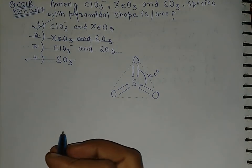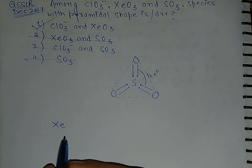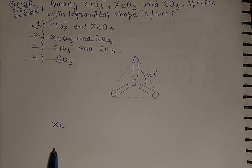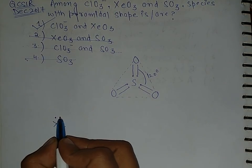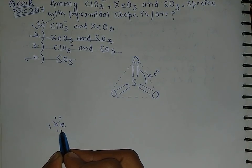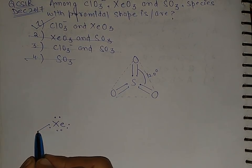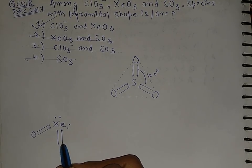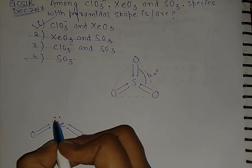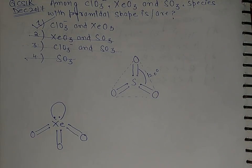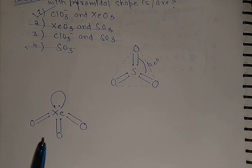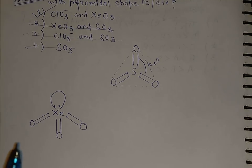Starting with XeO3: Xenon has eight electrons in the valence shell — inert gas configuration. So we have eight electrons: two, two, two, two, giving six, and the last two electrons. Adding three oxygens with one lone pair remaining, you can see the geometry of the molecule is different from the shape of the molecule.